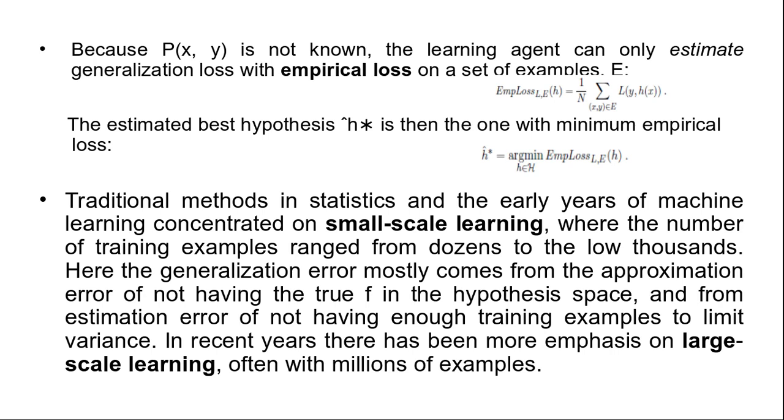Like hill climbing or greedy search that explores only part of the space, that gives us an approximation error. In combining the sources of error, we are left with an estimation for an approximation of the true function f. Traditional methods in statistics and early years of machine learning concentrated on small-scale learning, where the number of training examples range from dozens to the low thousands. Here the generalization error mostly comes from the approximation errors of not having the true f in the hypothesis space and from estimation error of not having enough training examples to limit variance.